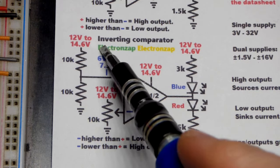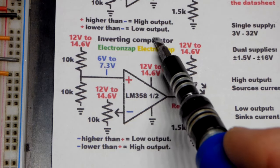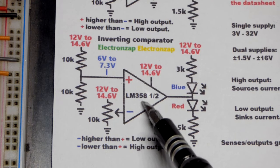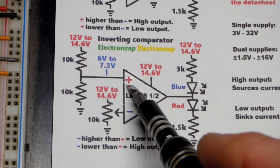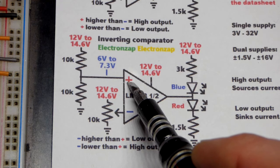So now, in this video, we're going to look at the op-amp inverting comparator using the LM358 again. And you notice here, we have the non-inverting input above the inverting input.